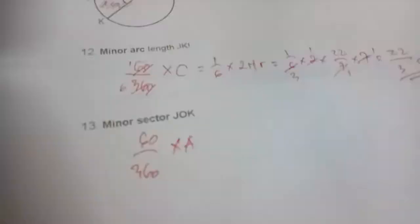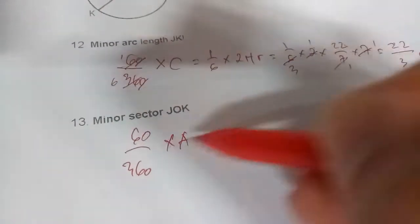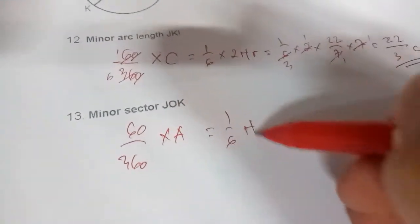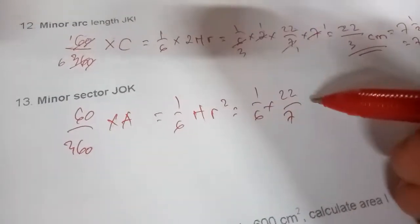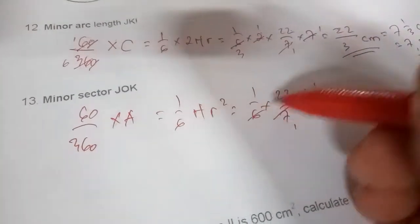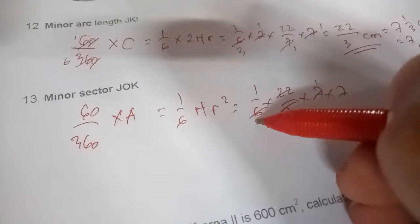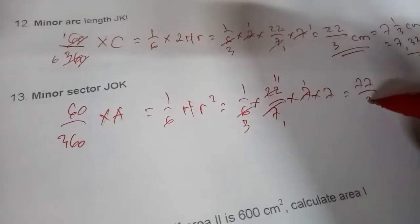So it equals... we're going to simplify this the same way. It's 1/6 × πr². So it's 1/6 × 22/7 × 7². You can cancel this and this. 6 divided by 2 is 3, and we get 77 over 3.